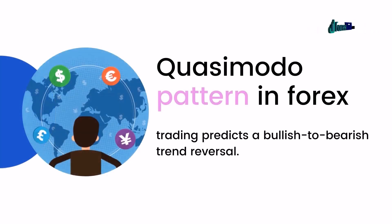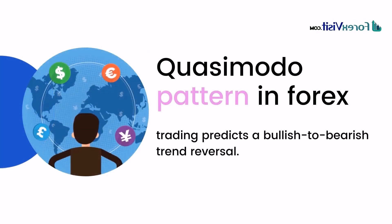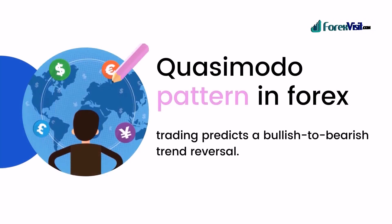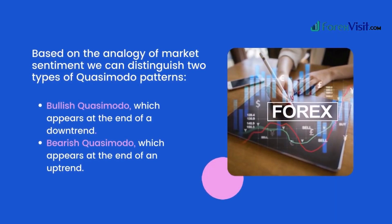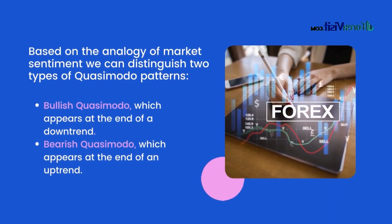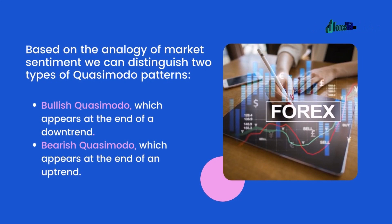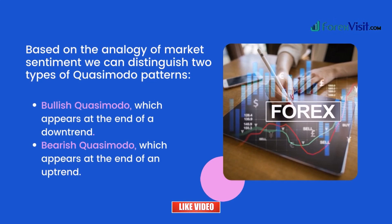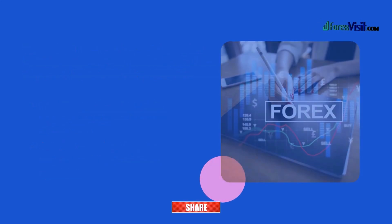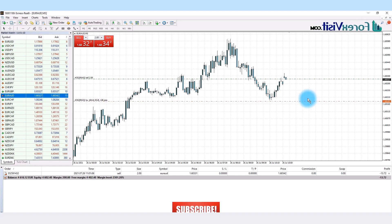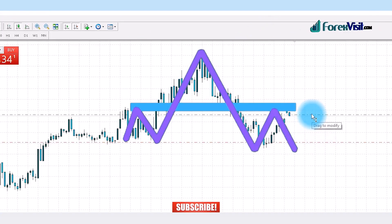The currency model pattern in forex trading predicts a bullish to bearish trend reversal based on the analogy of market sentiment. We can distinguish two types: the bullish currency model, which appears at the end of a downtrend, and the bearish currency model, which appears at the end of an uptrend.